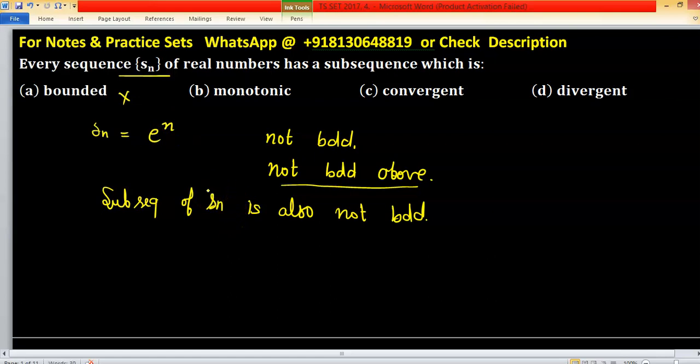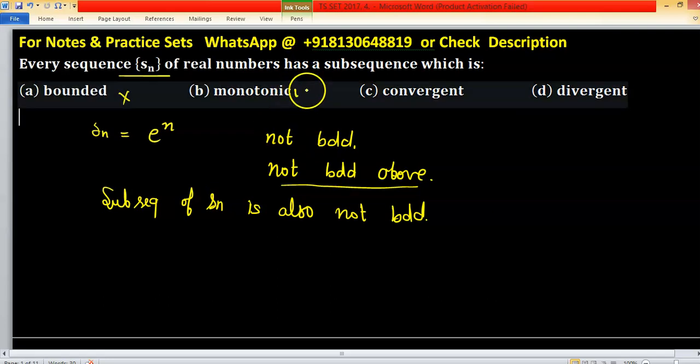Every sequence has a monotonic subsequence. This is a statement: every sequence, either it is constant or non-constant, has a monotonic subsequence. Option b is correct.